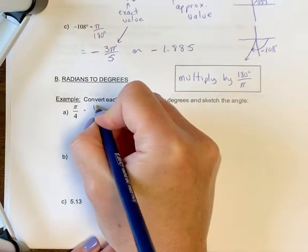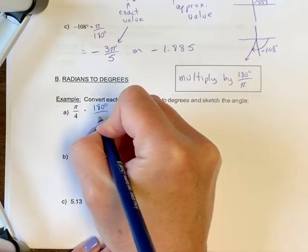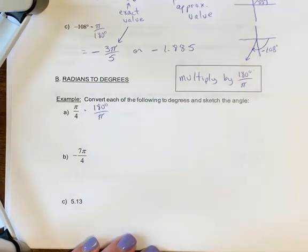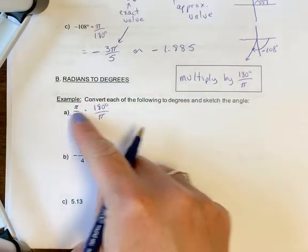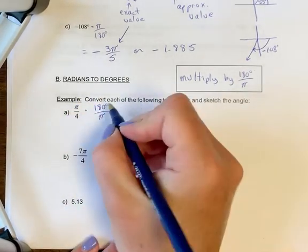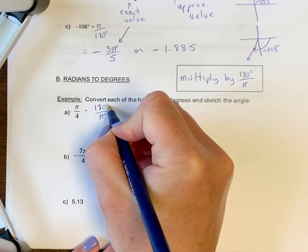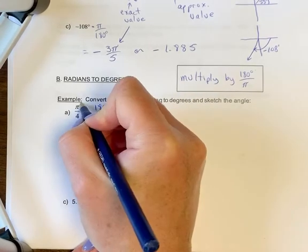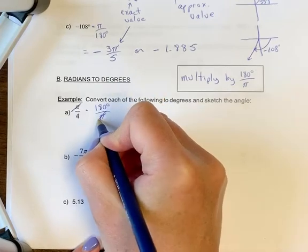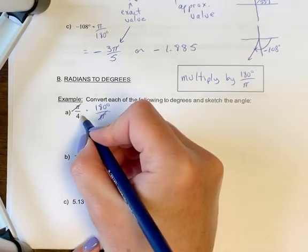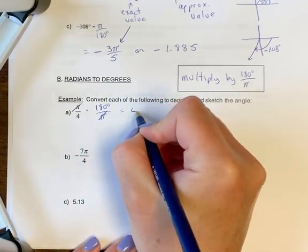So I'm going to multiply this by 180 degrees over pi. Now we can't rely on units cancelling. Technically the radian unit that we don't see would cancel, but the degree unit remains. So if you want the degree unit to remain, it's going to be in the numerator. The pi symbols cancelled, but those are numbers. So 180 divided by 4 is equal to 45 degrees.